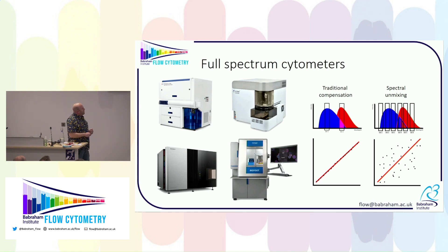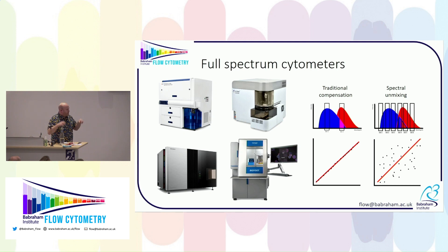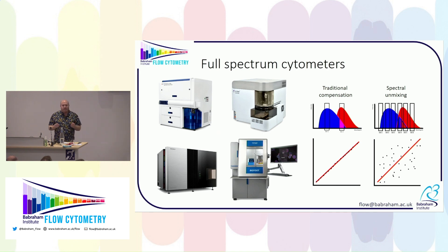Equally with spectral unmixing, we have lots of detectors. We use every single detector. We then unmix, deconvolute, or demix the signal to produce individual fluorophores — we assign the photons to the correct fluorophore and then we can analyze the data. There are many ways of doing this, and each way will produce very slightly different results. We'll talk about weighted least squares unmixing — this is the process of choosing the best unmixing algorithm for your data.